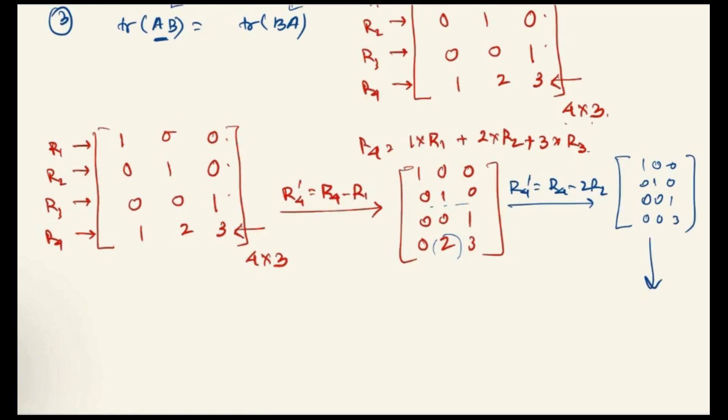And likewise, if you do another row operation, that is R4 dashed equals to R4 minus 3R3, the third one, you can make the three zero if you multiply this third row with three and minus it with the final row. And then you can get a total zero row: 1, 0, 0, 0, 1, 0, 0, 0, 1, 0, 0, 0, 0, 0.